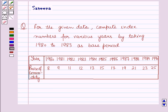Hello and welcome to the session. In this session we will discuss a question which says that for the given data, compute index numbers for various years by taking 1980 to 1983 as the base period.